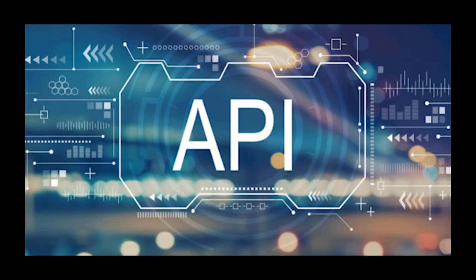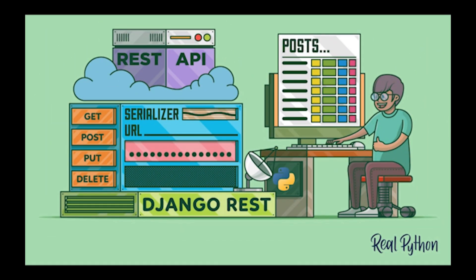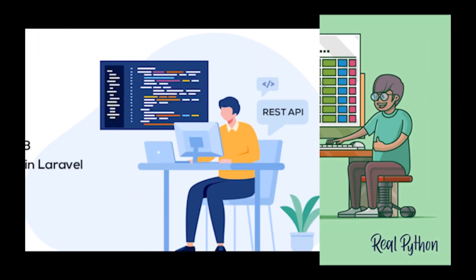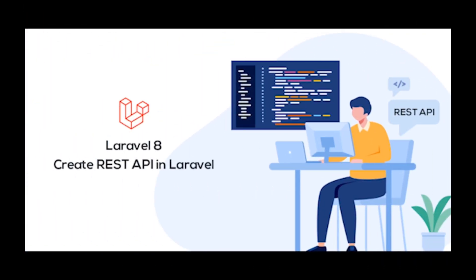API: Django doesn't come with built-in support for APIs — the developer needs to include external libraries to build APIs. On the other side, Laravel comes with built-in API support, so there is no need to include any other library to create a REST API.